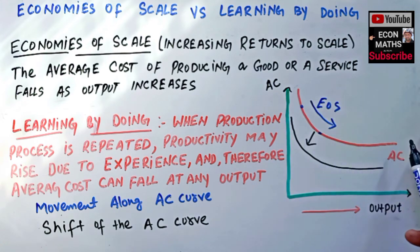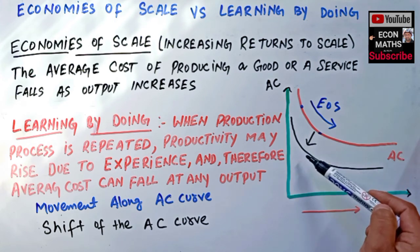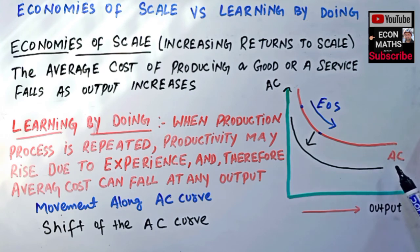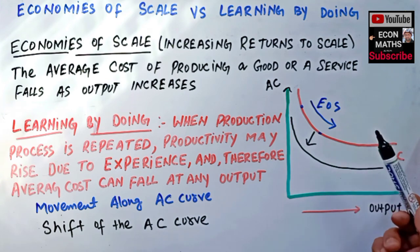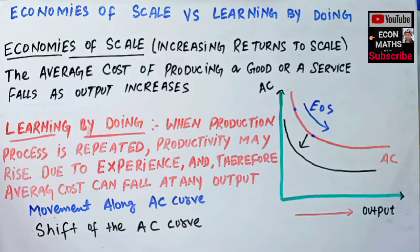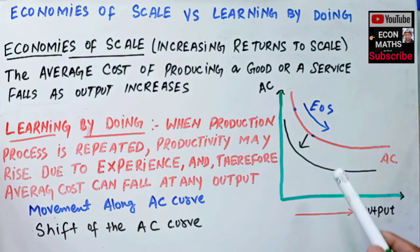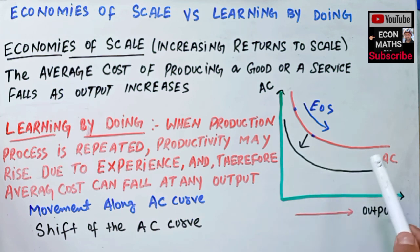So the simple thing is: by economies of scale we mean when we move along the average cost curve. When there is a shift to the left of the average cost curve, it may be because of learning by doing — when the production process is repeated, productivity may rise due to experience and average cost falls. The movement along the average cost curve exhibits economies of scale, and the shift of the average cost curve to the left can be because of learning by doing. I hope I made myself clear, thank you.